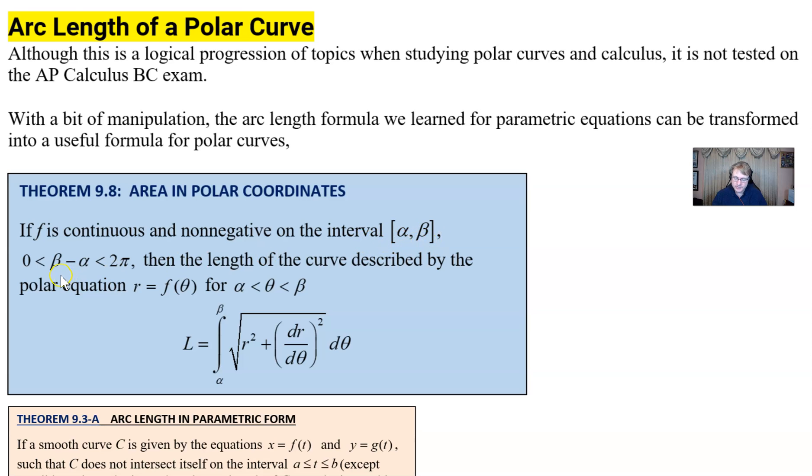If you've got a function that's continuous and non-negative on some interval α to β, those are angle measures. As always, the difference between β and α must lie between 0 and 2π, which implies that the β angle is larger than the α angle. And then the length of the curve described by your polar equation r = f(θ) between α and β is simply this definite integral here. Notice we're integrating between those two angle measures the square root of the radius squared plus the derivative of the radius with respect to theta squared.